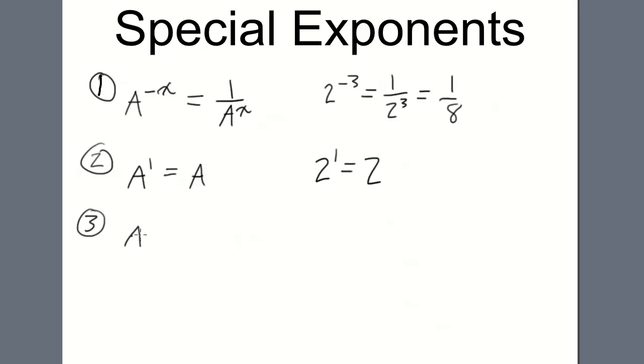If we have a to the 0, that will equal 1, as long as a itself does not equal 0. So, for 2 to the 0, that would be 1. If we have 12 to the 0, that would be 1. If we have infinity to the 0, that would also be 1.